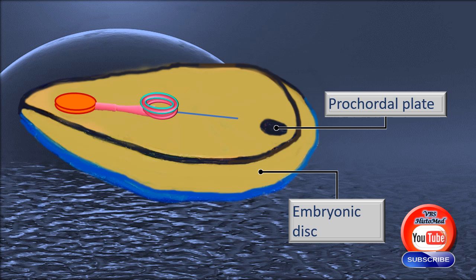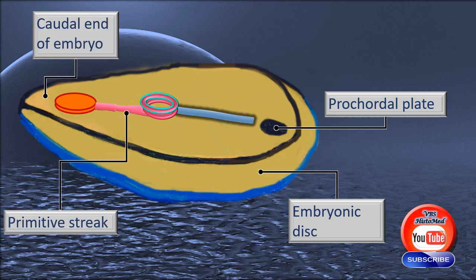That is the primitive streak, ending anteriorly in the ring, that is the primitive knot. The axial line is still visible. From the primitive knot, the notochordial process will develop and it will head towards the prochordial plate. In a series of quick successions, the cloacal membrane, the primitive streak, the primitive knot, the notochordial process all start developing along the midline axis.